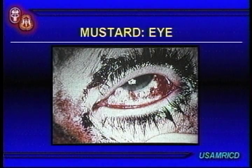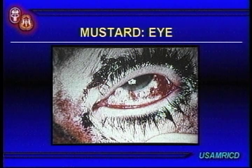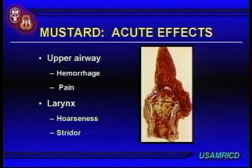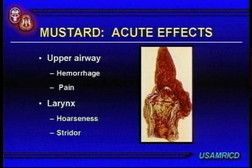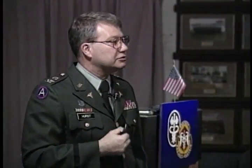A moderately severe mustard conjunctivitis shows hemorrhage in the conjunctiva. The burned larynx is devastating — upper airway symptoms include hemorrhage, pain, hoarseness, and stridor. You're not going to be comfortable with a trachea or larynx that looks like that.